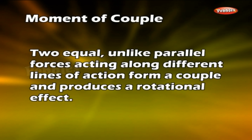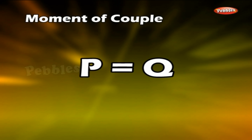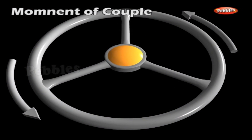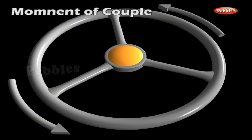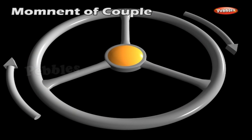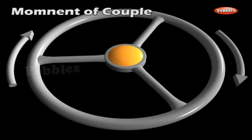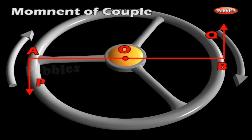Two equal, unlike parallel forces acting along different lines of action form a couple and produce a rotational effect. Let P equal Q in magnitude. Since they are equal and opposite, the resultant force is zero, and they do not produce any translatory motion. Both forces try to produce rotation in the same order — that is, in the anti-clockwise direction.